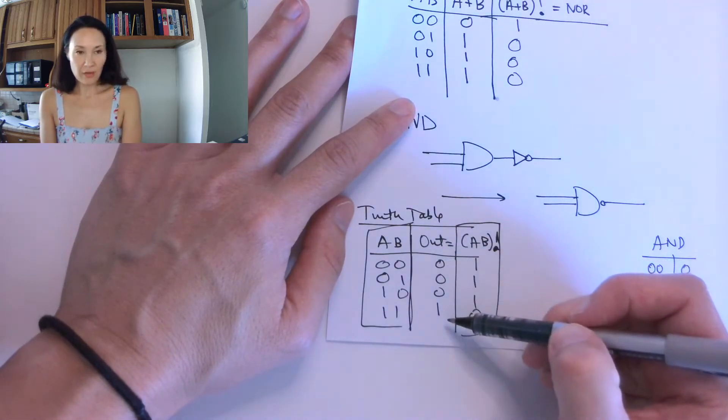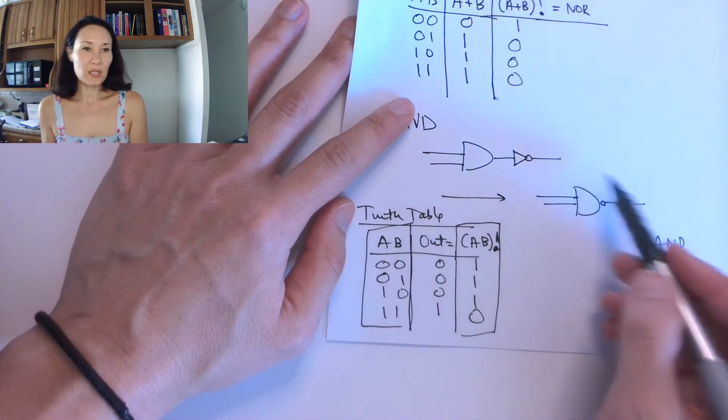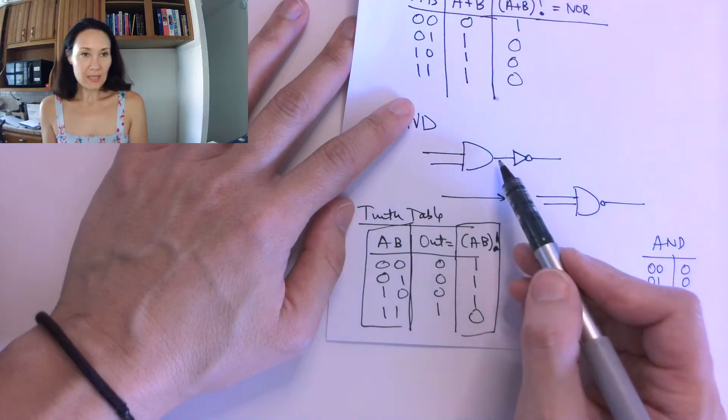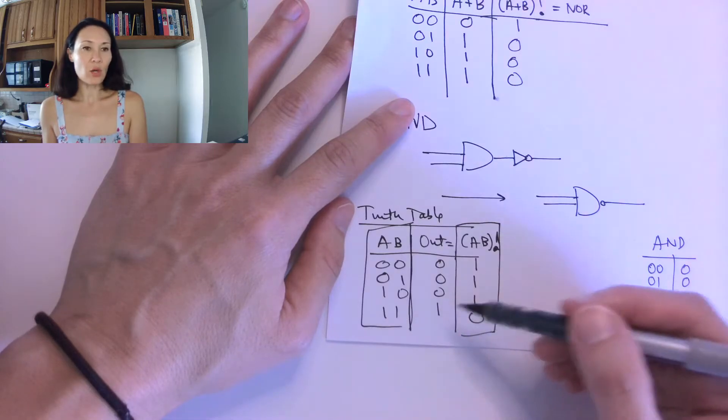But if you like, I always like to have kind of an intermediary column for me, because this is really two steps. It's ANDing something, and then it's inverting it. If you want to have a column for your AND, that's totally fine.